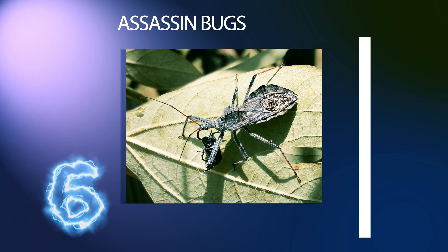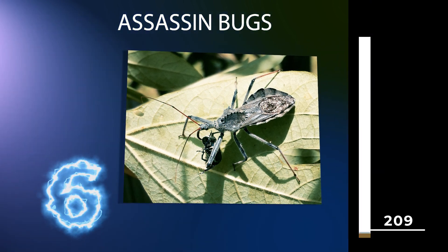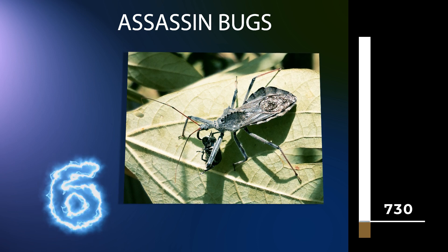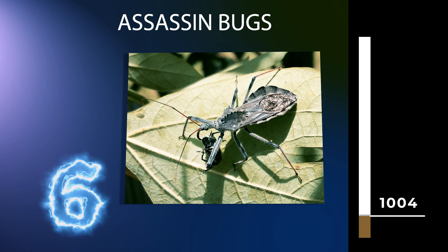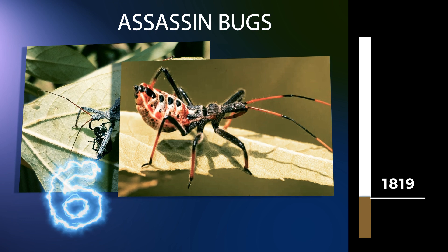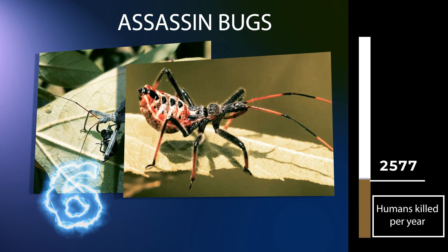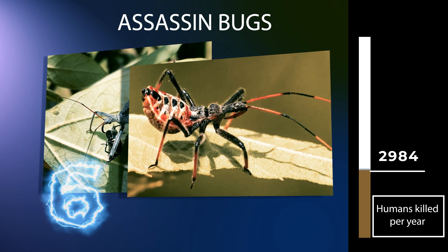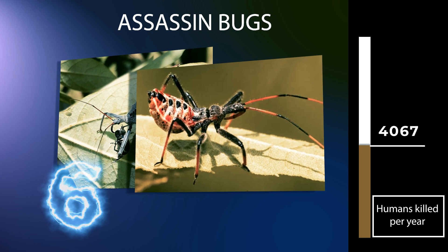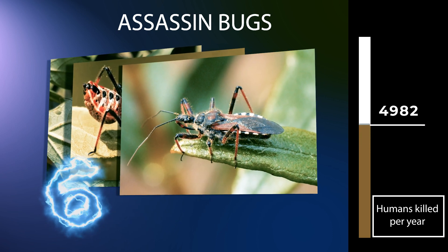The Reduviidae is a large cosmopolitan family of the order Hemiptera, true bugs. Among the Hemiptera, and together with the Nabidae, almost all species are terrestrial ambush predators. Most other predatory Hemiptera are aquatic. The main examples of non-predatory Reduviidae are some blood-sucking ectoparasites in the subfamily Triatominae. Most members of the family are fairly easily recognizable. They have a relatively narrow neck, sturdy build, and a formidable curved proboscis, sometimes called a rostrum.